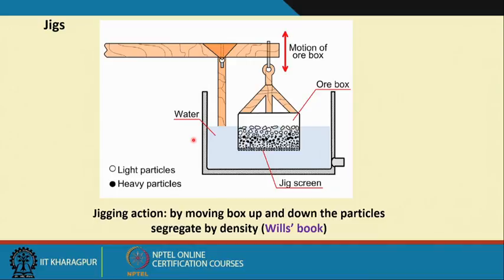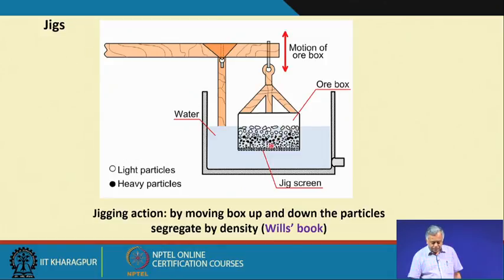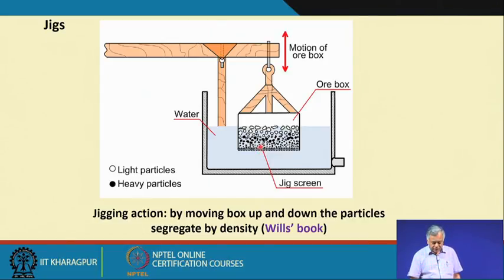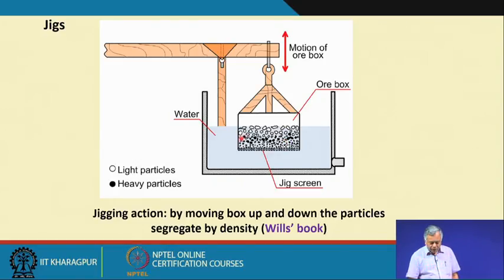Now what is jigging? If you look at this picture, which I have taken again from Beowheels book — if I have an ore box like this, and at the bottom you have some screen whose apertures are finer than the particle size of the finest particle. So whatever the finest particle you have, the aperture size is smaller than that.